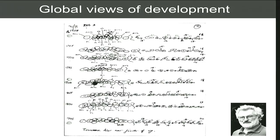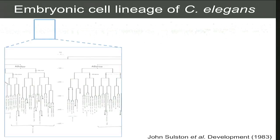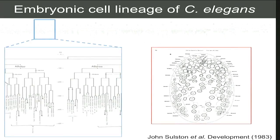The C. elegans fate map is a roadmap to development that in part was responsible for Sulston and colleagues' 2002 Nobel Prize. It was constructed very laboriously by sitting at a microscope and actually recording the birth of all cells during worm development over the better part of a day. When you look at an exploded view, it gives you the precise lineage history of all the developed cells in the worm.